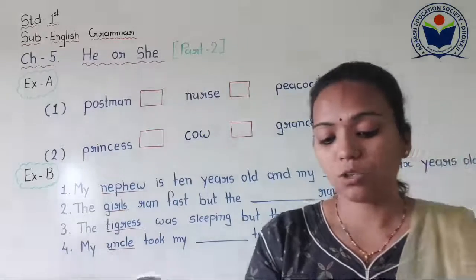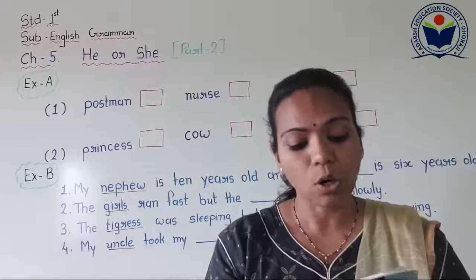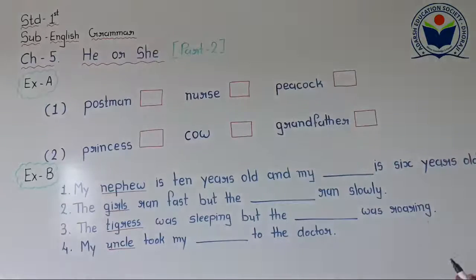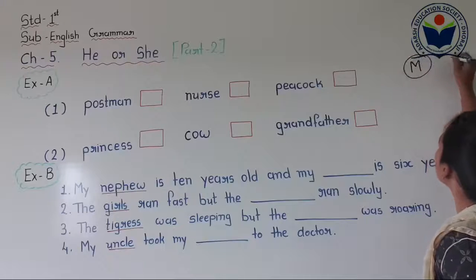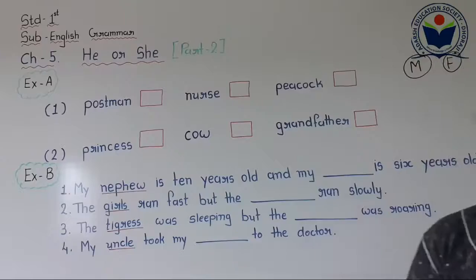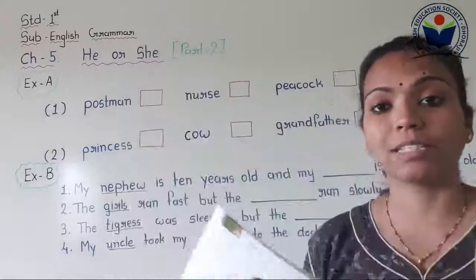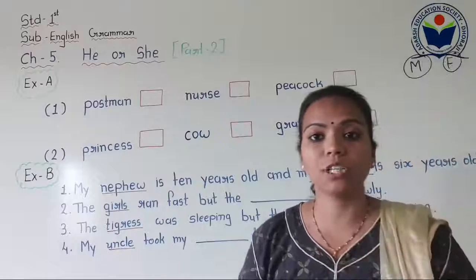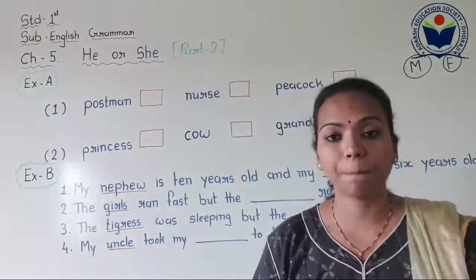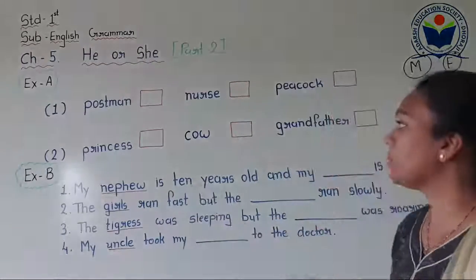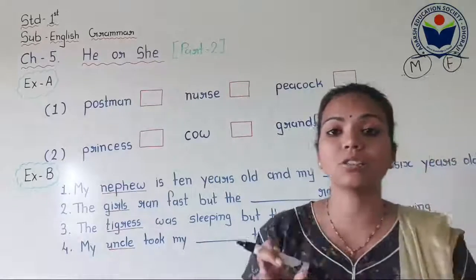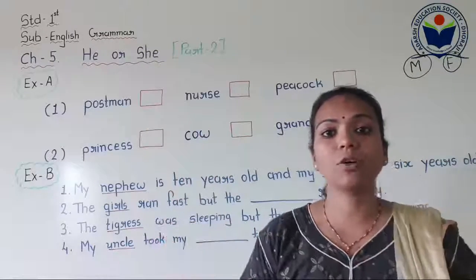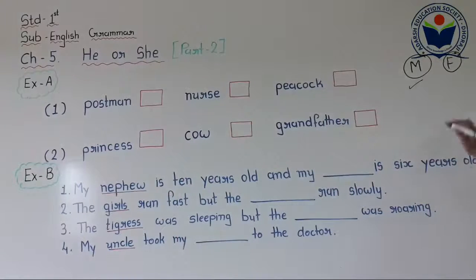Exercise A: Say whether the following belong to the male group or female group. Write capital M for male and capital F for female. Here we have three pictures to identify — postman, nurse, and peacock. You have to identify whether each character is male or female, and write capital M or capital F accordingly.